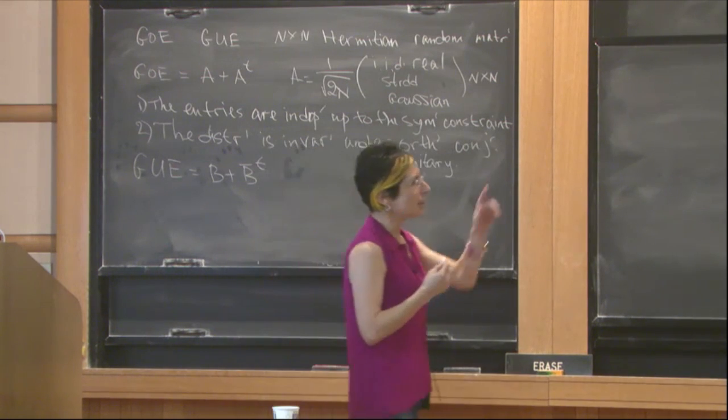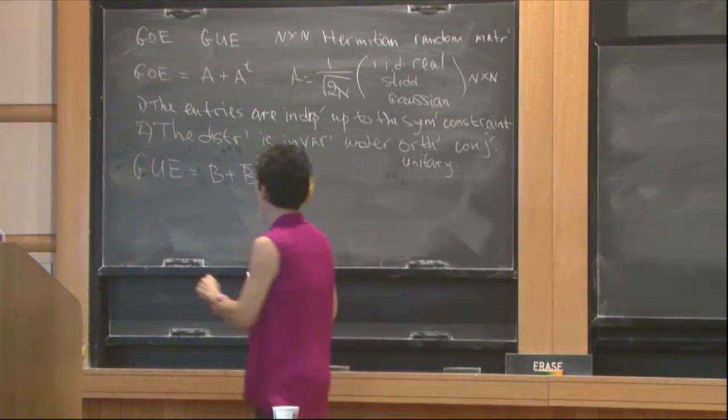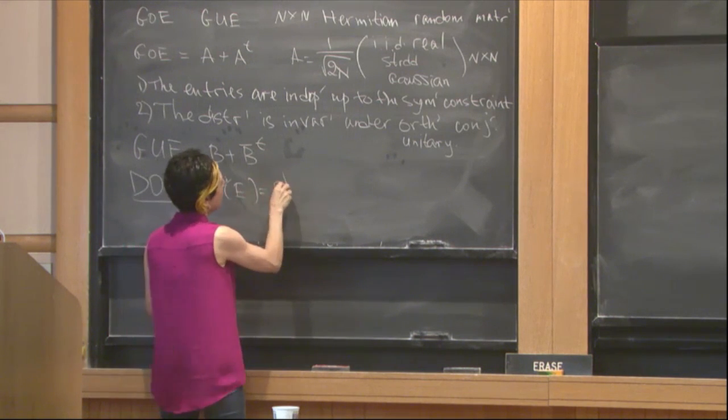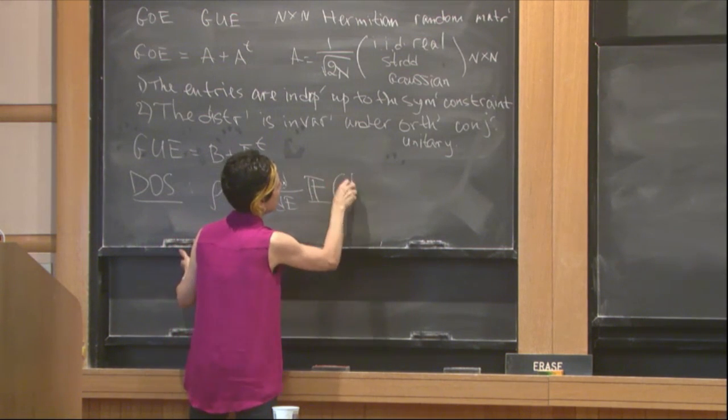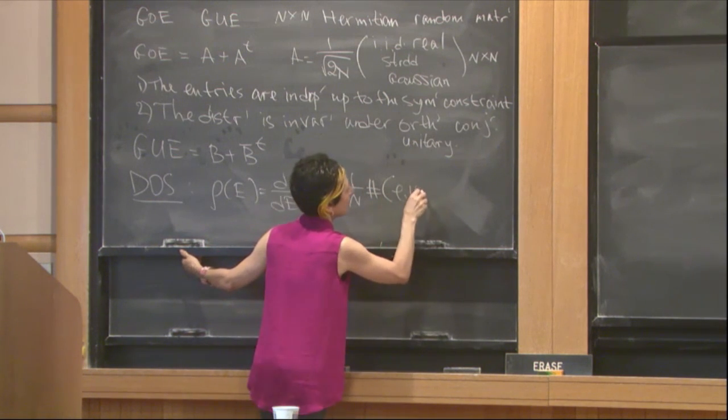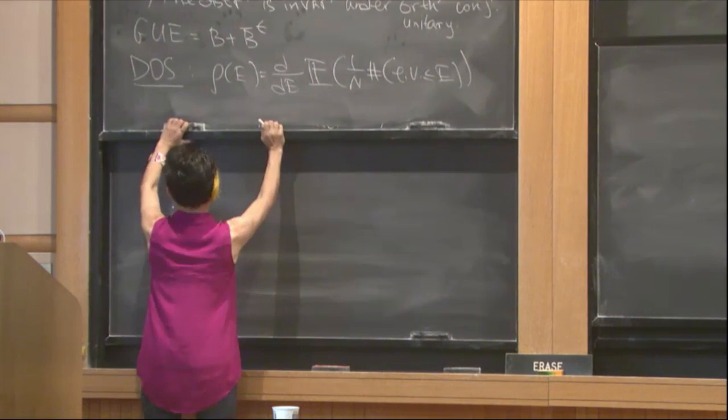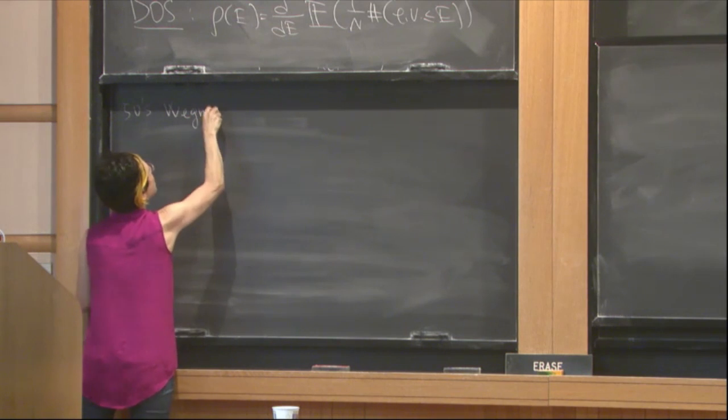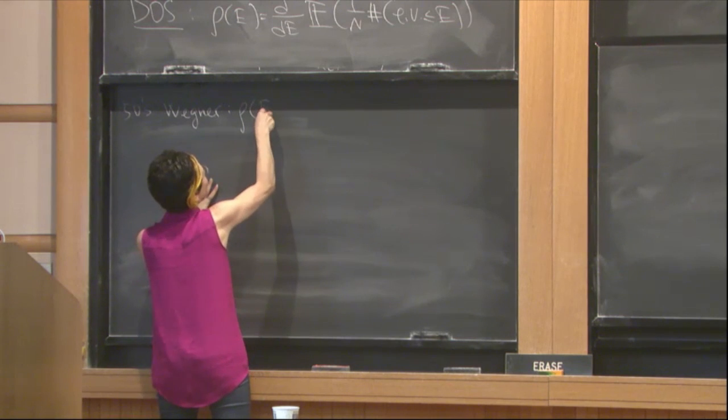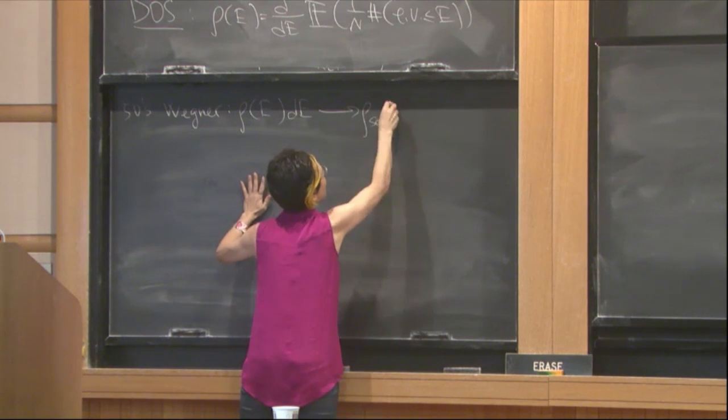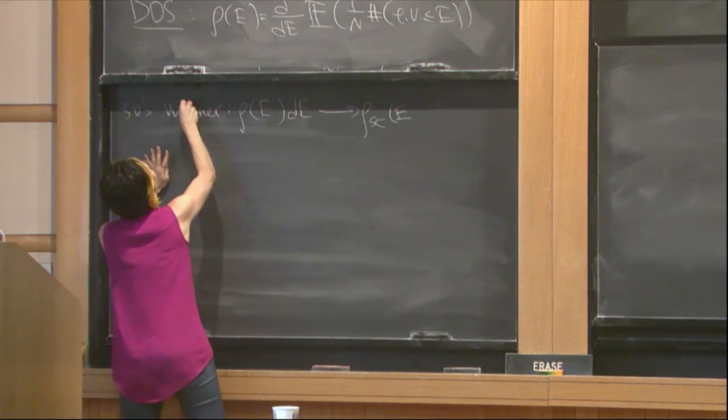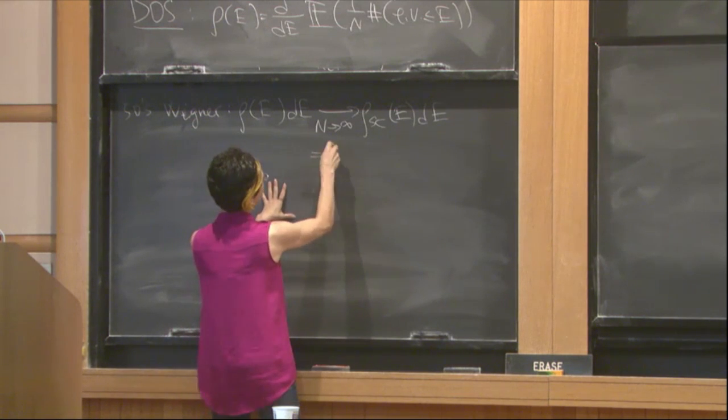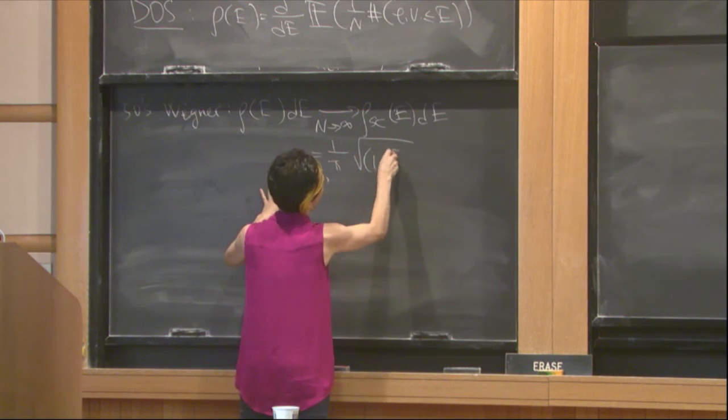Now let me define the second object from the title of my talk, which is the density of states. The density of states is defined as an average density of eigenvalues at E. In the 50s, Wigner proved that the density of states converges weakly to the semicircle density, the Wigner semicircle density, as the size of the matrix goes to infinity, which is defined by 1 over π square root of the positive part of 1 minus E squared over 4.